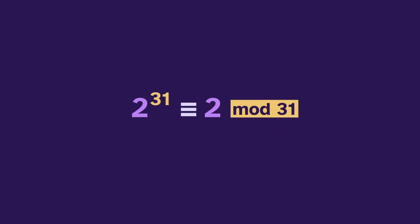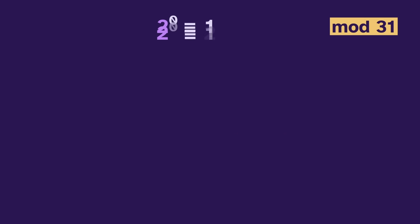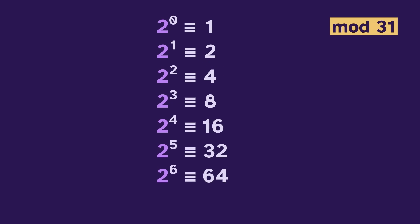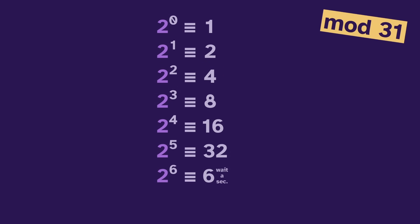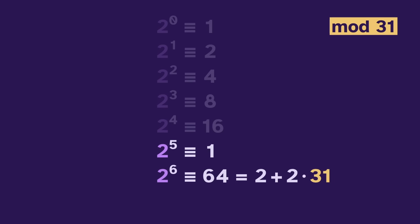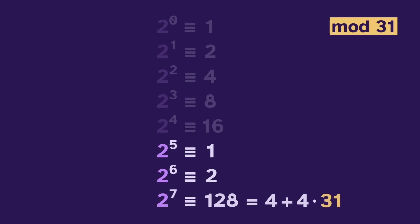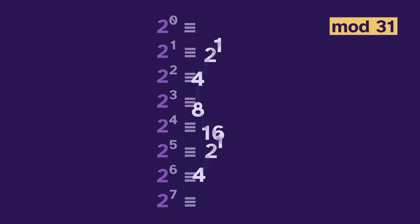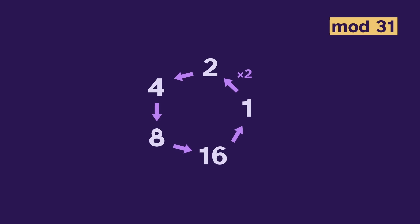Let's take a look at the powers of 2 mod 31. We have 1, 2, 4, 8, 16, 32 — wait, we're in mod 31, so 32 equals 1. And then 64 equals 2, 128 equals 4. We're just repeating the earlier powers. The powers of 2 make a loop of length 5.